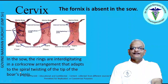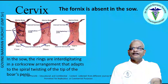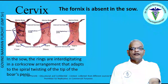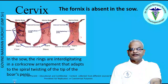The fornix — a fold of skin where the cervix attaches with the vagina — is absent in the sow. In cattle there are cervical annular rings, whereas in the mare there are no cervical annular rings. The sow's cervix has a corkscrew-type interdigitating arrangement that adapts to the spiral twisting of the tip of the boar's penis. These are the structures of the cervix in different animal species.